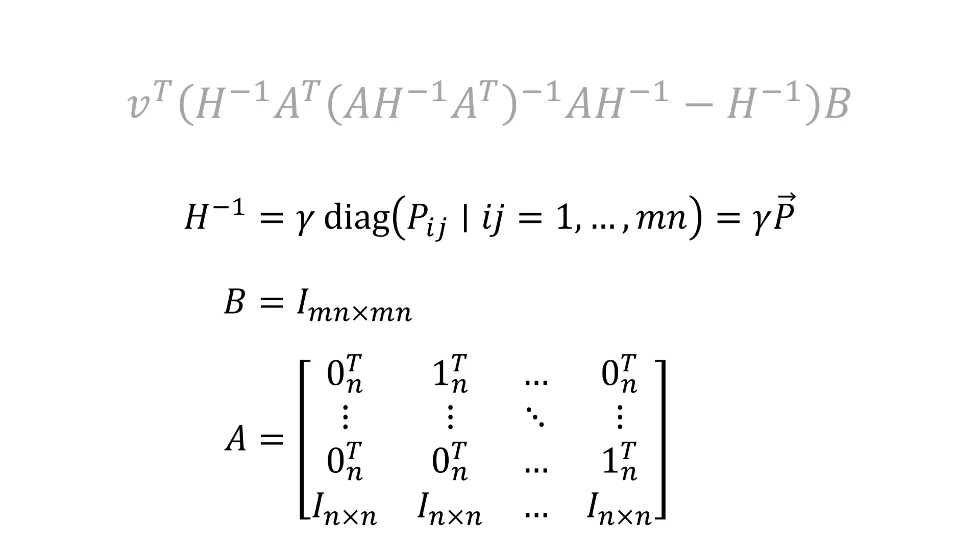Re-examining our expression for the backward-going gradient, it appears that we now have everything we need. V transpose is the incoming gradient of the loss with respect to the output. H inverse is a diagonal matrix with diagonal entries gamma p_ij. B is an mn by mn identity matrix, and A is a matrix of coefficients encoding our constraints. Blindly forming these matrices and evaluating this expression would be computationally intractable. Let's dig into the different parts in some more detail.